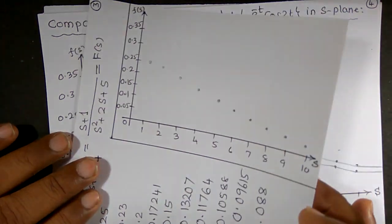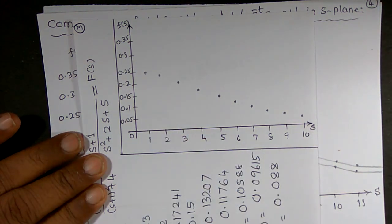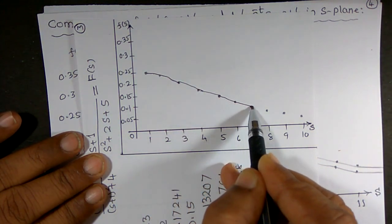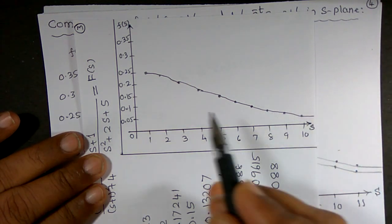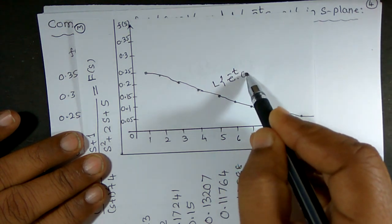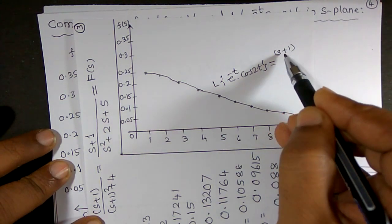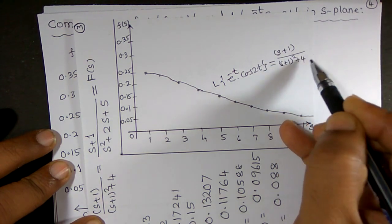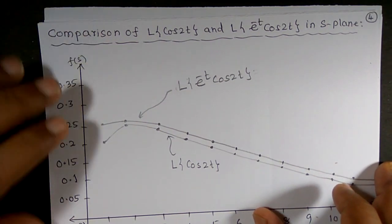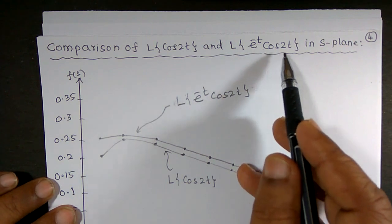Now I want to draw the graph of this function. With s = 1 giving 0.25 and s = 2 giving 0.23, joining all these points gives a decreasing curve. This is the Laplace transform of e^(-t)·cos 2t, equal to (s+1)/((s+1)² + 4).